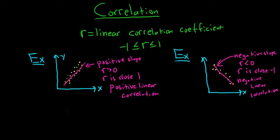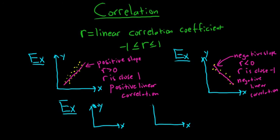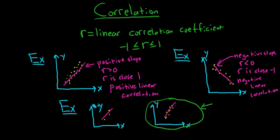Sometimes the number of dots also matters. Let's look at this example. Say we have the y-axis and the x-axis — two scatter plots. In both cases it seems we have a straight line pattern, so in both cases we have positive linear correlation. The question is: in which case do we have better positive linear correlation? That would be the case with more dots. So not only does the proximity of the dots to the line matter, but the number of dots also matters.